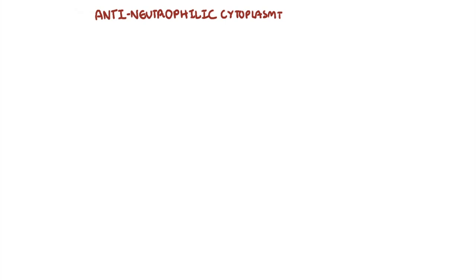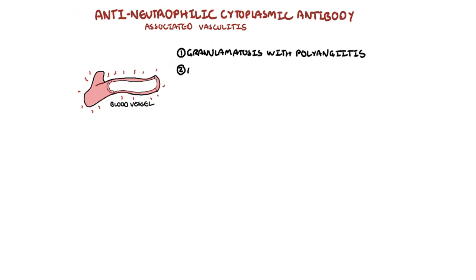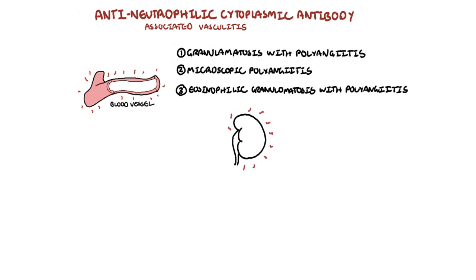Anti-neutrophilic cytoplasmic antibody associated vasculitis, or ANCA-associated vasculitis for short, is a type of vasculitis that affects small blood vessels. They include three diseases and are characterized by the presence of ANCA antibodies. These three conditions are granulomatosis with polyangiitis, microscopic polyangiitis, and eosinophilic granulomatosis with polyangiitis. Some of these can lead to a complication called ANCA nephritis or ANCA-associated glomerulonephritis.